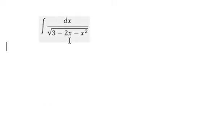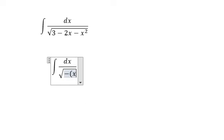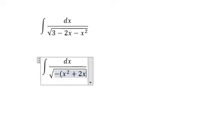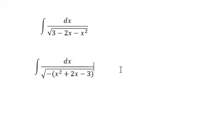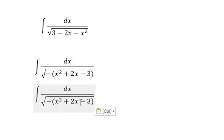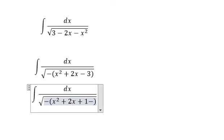First, we need to analyze the expression inside the square root. We factor out a negative and we have x squared plus 2x minus 3. Then we add 1 inside the bracket, so we need to subtract 1, and we get minus 4.